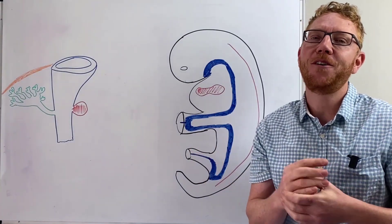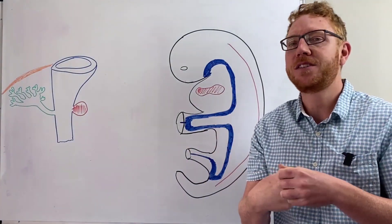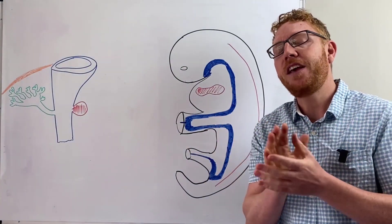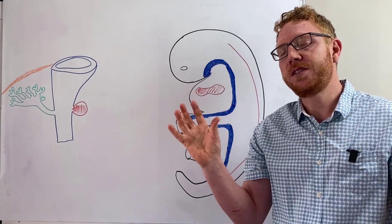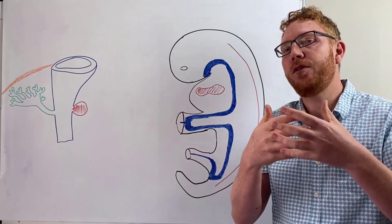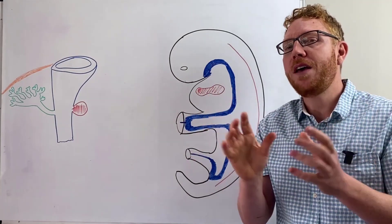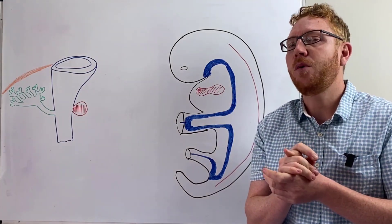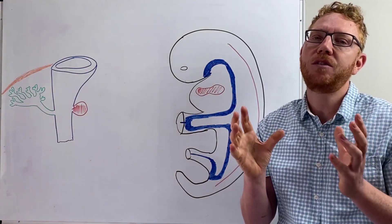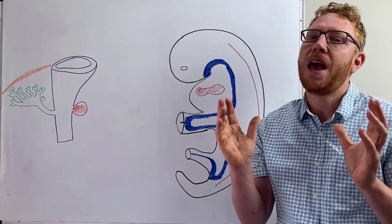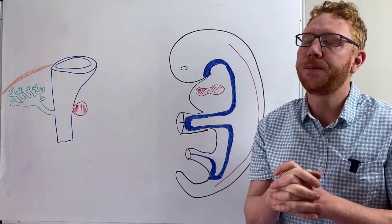Welcome to this short video on the embryology of the pancreas. In this video you will learn how the pancreas develops from two distinct parts and merges into one, why the blood supply to the pancreas is the way it is, and then finally the ductal system and how it essentially drains into the duodenum.